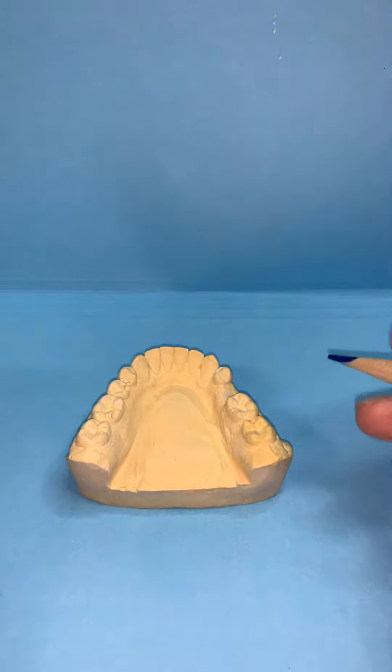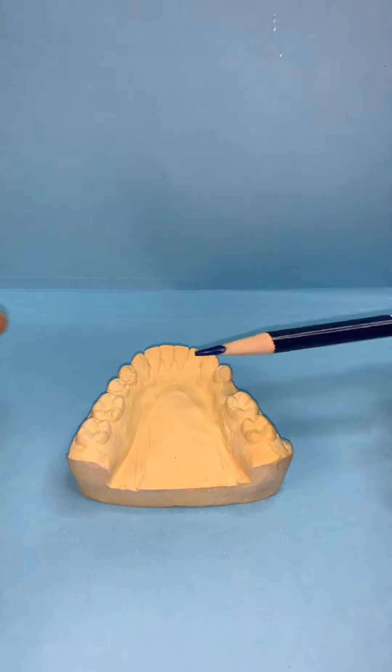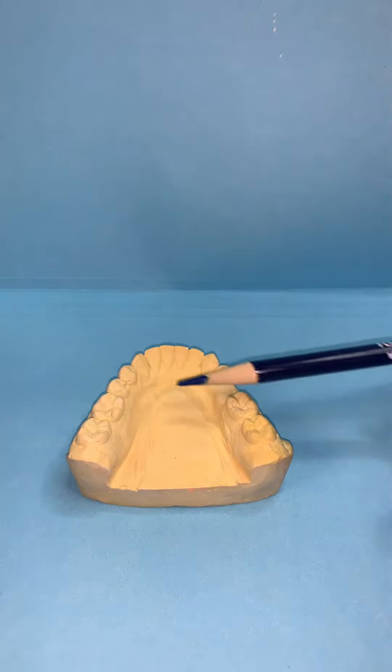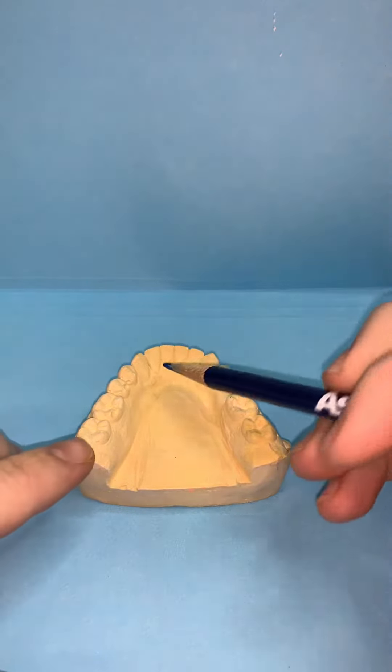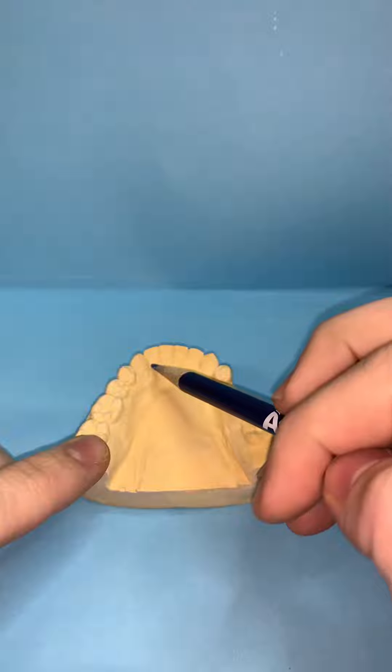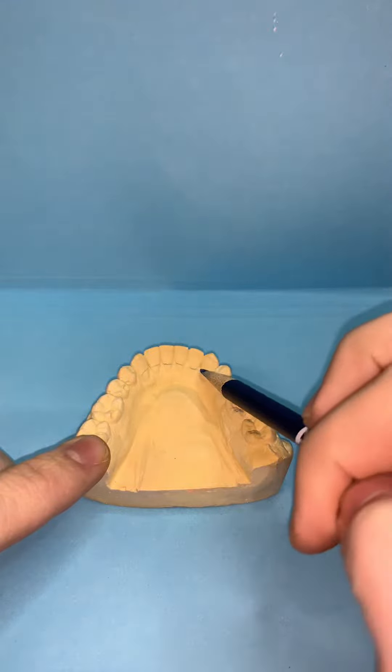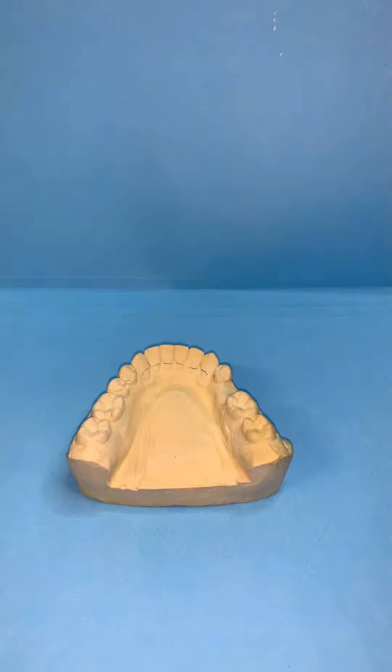To make a lower lingual holding arch, we would band the two first molars. Then you want to make sure when we bend our wire, we're touching the cingulums of the anterior teeth.